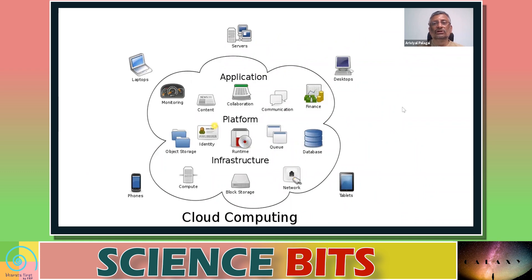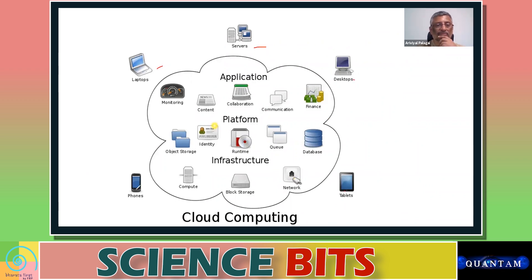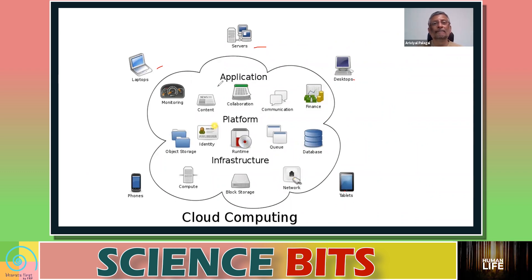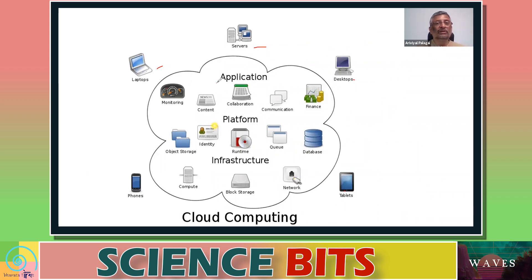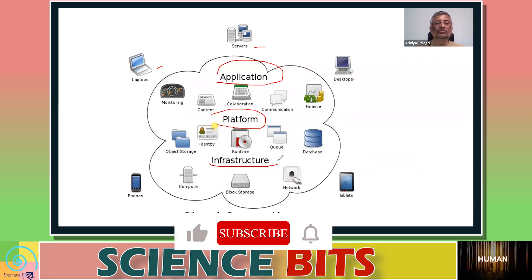In cloud computing, you have a number of things connected to it — your laptop, servers, desktops, tabletops, phones — any of them can be interlinked as a source for accessing or depositing data. The computing may be related to application, platform, or infrastructure — these are the three major services that cloud computing can provide.